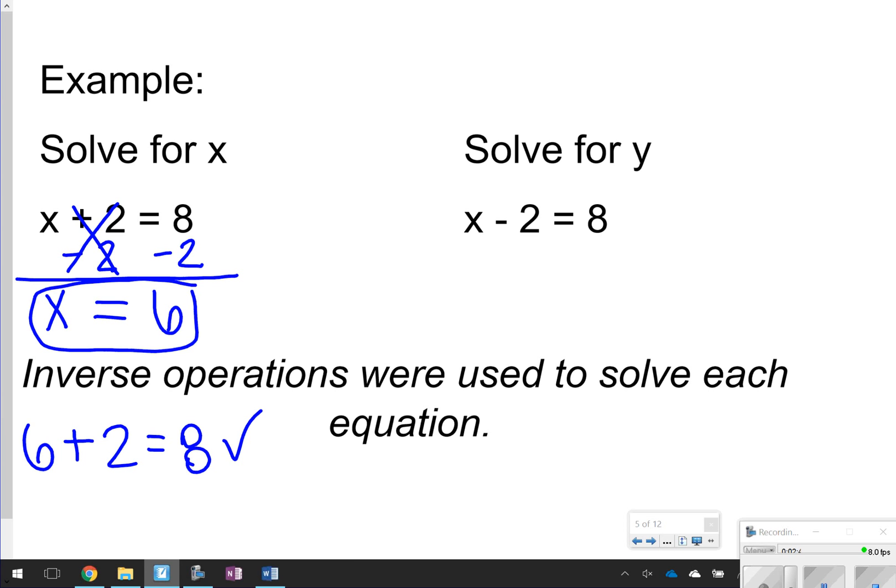For the second one, again we see subtraction, and we see a -2 with the x. To get the -2 away from the x, I'm going to do the opposite, which is +2. If I do +2 to the left side of the equation sign, I will also do +2 to the right side of the equation sign. Again, notice that -2 and +2 or negative 2 and positive 2 cancel out, so all I'm left with is x on the left side. And over here, I have an 8 and a +2. 8 and +2 make 10, so my answer should be x = 10. Again, I can double check my work by plugging in 10 where x is. If 10 - 2 = 8, then I've done the question correctly.